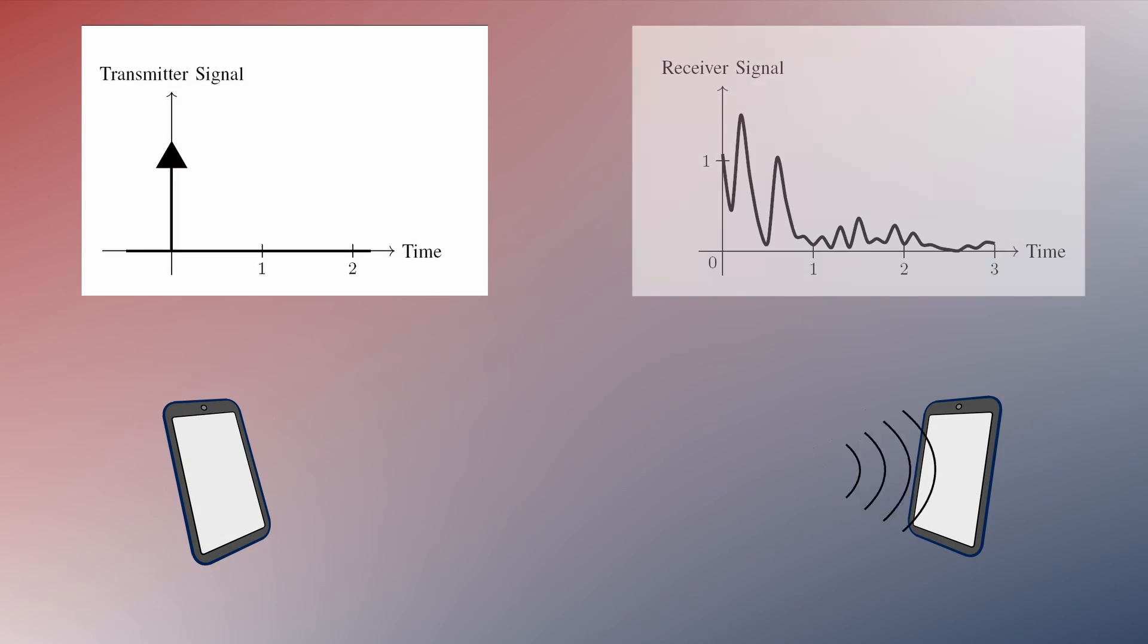A fundamental property of a communication system is its channel impulse response. When a transmitter sends a signal, the channel impulse response describes the output observed at a receiver. This concept is true for any kind of communication system, including diffusion-based molecular communication.